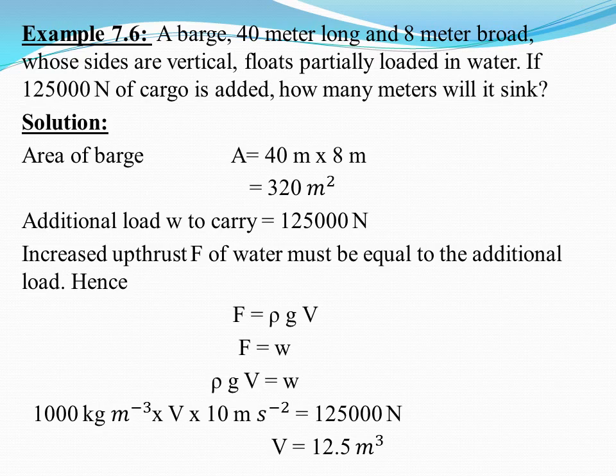Now let's solve example 7.6 from your book. A barge 40 m long and 8 m broad with vertical sides floats partially loaded in water. If 1,25,000 N of cargo is added, how many meters will it sink? The area of the barge is 320 m². The increased upthrust must equal the additional load, so F = ρgV. Using the Archimedes' principle, F = W. Comparing both equations, ρgV = W. Substituting values gives V = 12.5 m³.